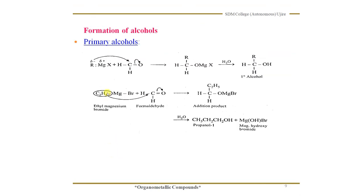Next, we can prepare alcohol starting from a Grignard reagent. We know that there are three types of alcohol: primary alcohols, secondary alcohols, and tertiary alcohols. It is possible to prepare all three types of alcohol starting from a Grignard reagent. Let me explain the preparation of primary, secondary, and tertiary alcohols one by one.